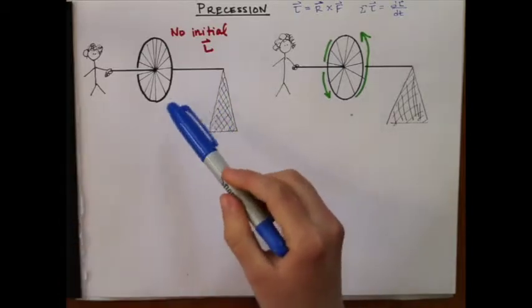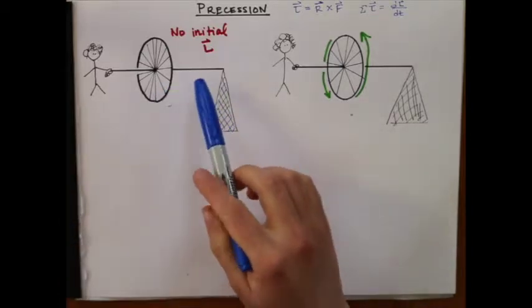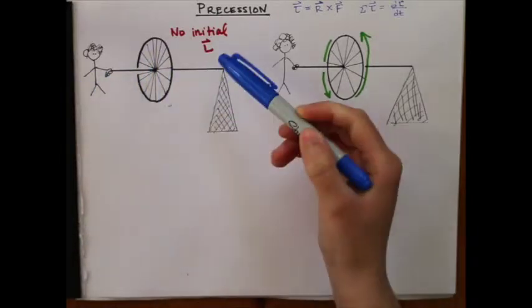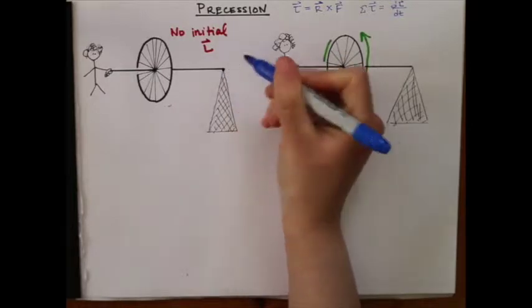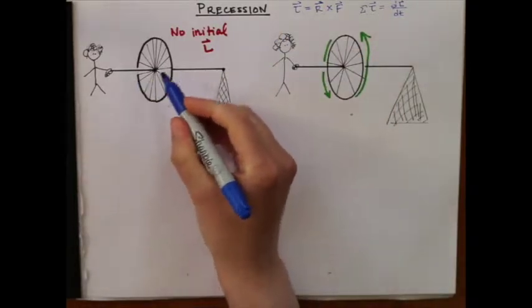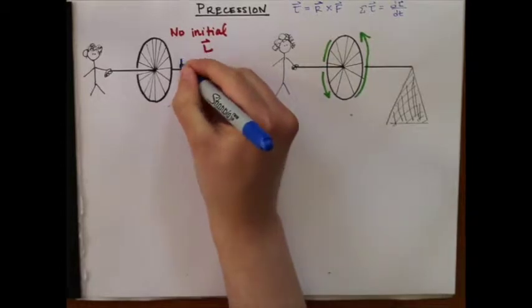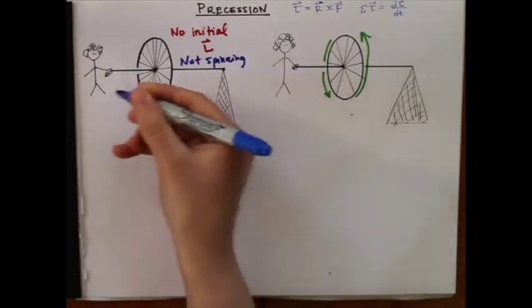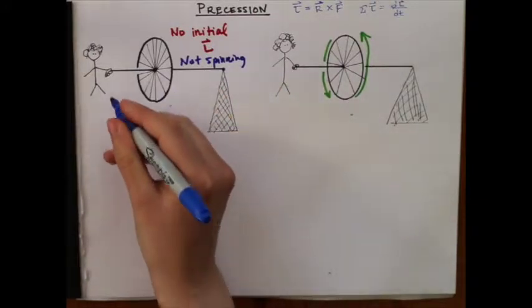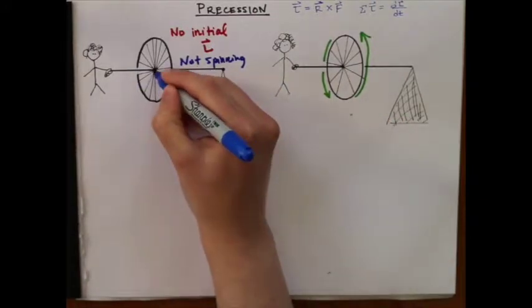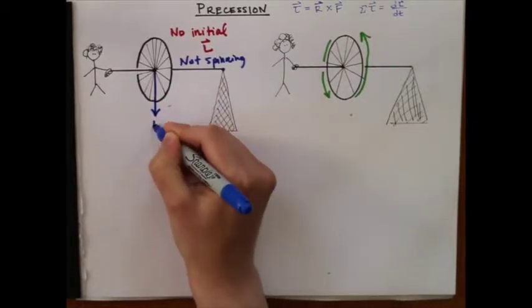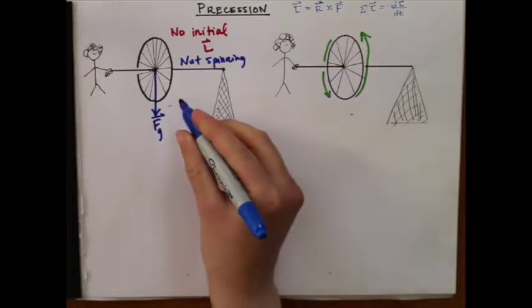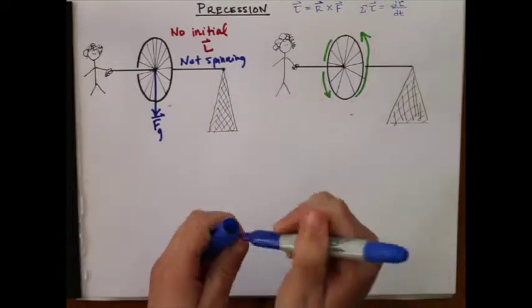So let's start with the case where there is no initial L. Here I have a bicycle wheel on its axis and it's attached to a pivot point right here. I'm going to start with no initial angular momentum, so the wheel is initially not spinning. I'm holding it horizontal to the floor, and then I'll let go. When I let go, the force of gravity acts on the wheel, which produces a torque.